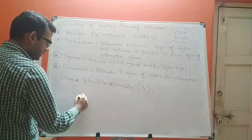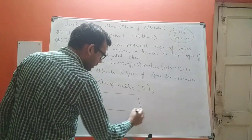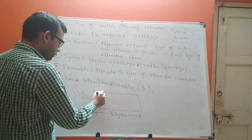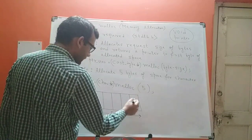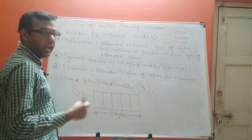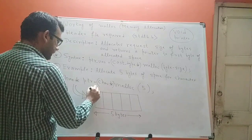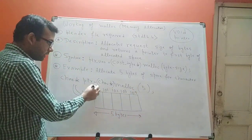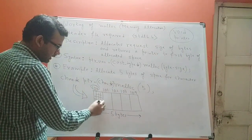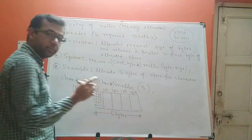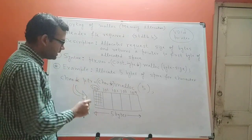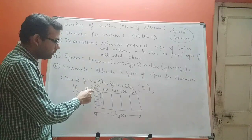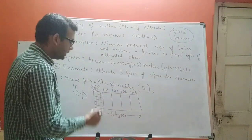Because of this statement, what happens in memory is I get a memory block whose size is five bytes — one byte, two bytes, three bytes, four bytes, and five bytes. Every byte has a memory address. Let's say the starting address is 100, so the next addresses are 101, 102, 103, and 104. What malloc does is return the address of the first byte — address 100 — because if I know the first byte I have the starting point of the memory block and can access all further bytes.